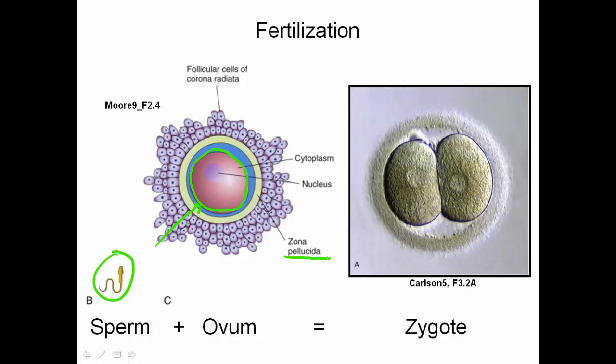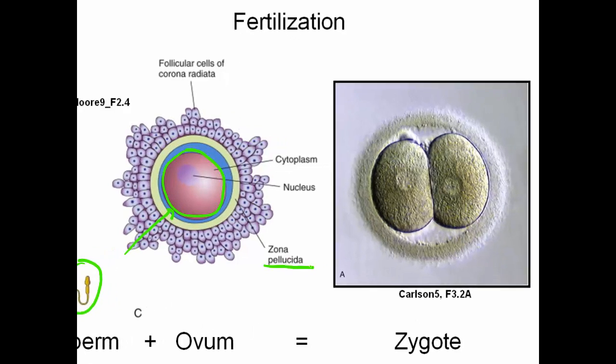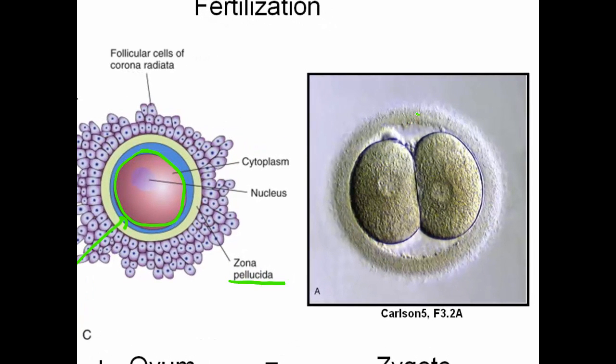This avoids polyspermy, or the fertilization of one ovum by multiple sperm. The illustration within the box depicts a zygote after a single mitotic division. Notice the ring that encloses the two cells — this is the zona pellucida.